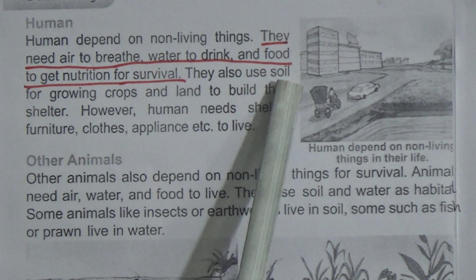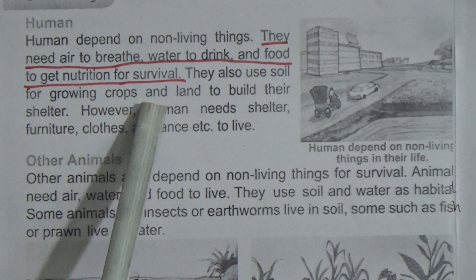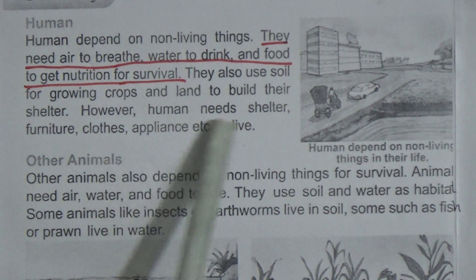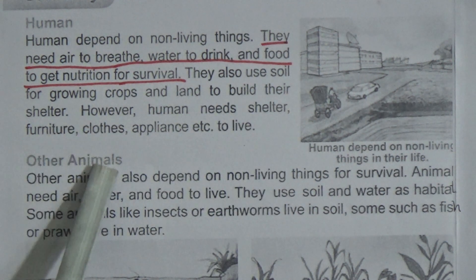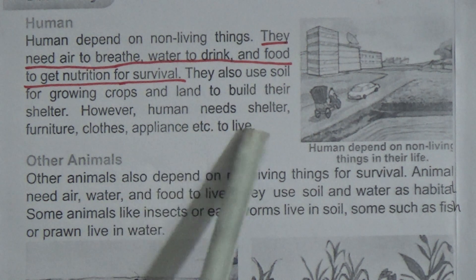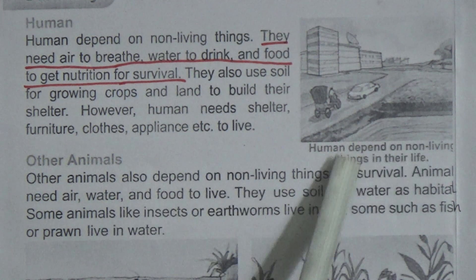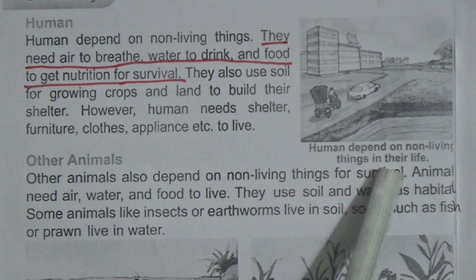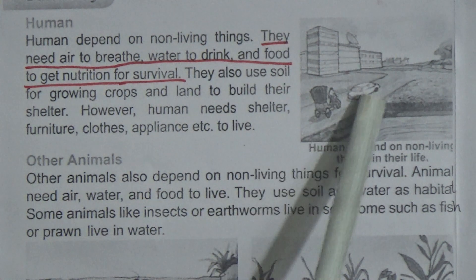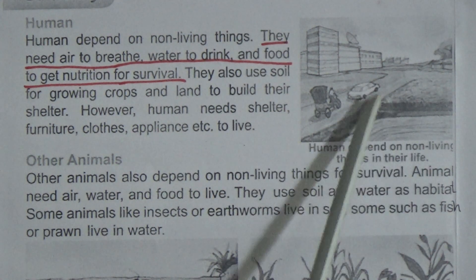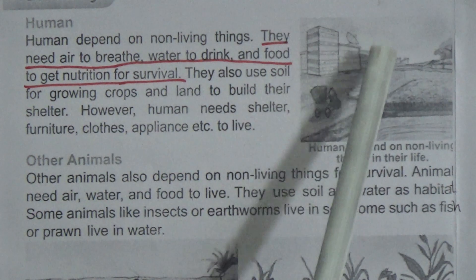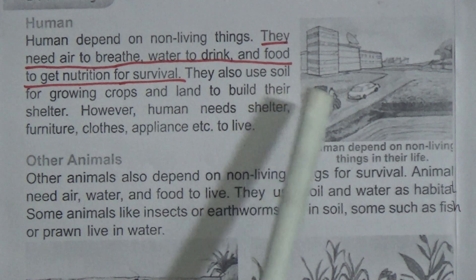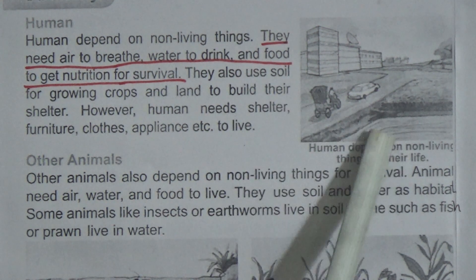They also use soil for growing crops and land to build their shelter. However, humans need shelter, furniture, clothes, appliances, etc. to live. Dear students, look at that picture — the human depends on non-living things in their life. We are using vehicles, we made our shelters on the soil, and we are taking air for our breathing. All are non-living things — whatever we use for our living.